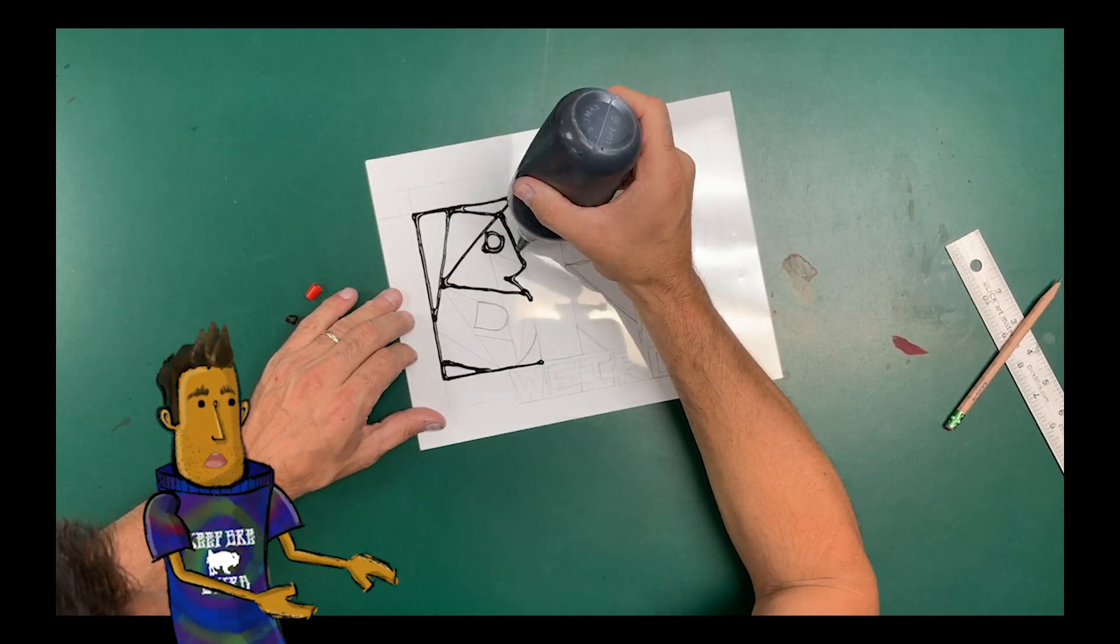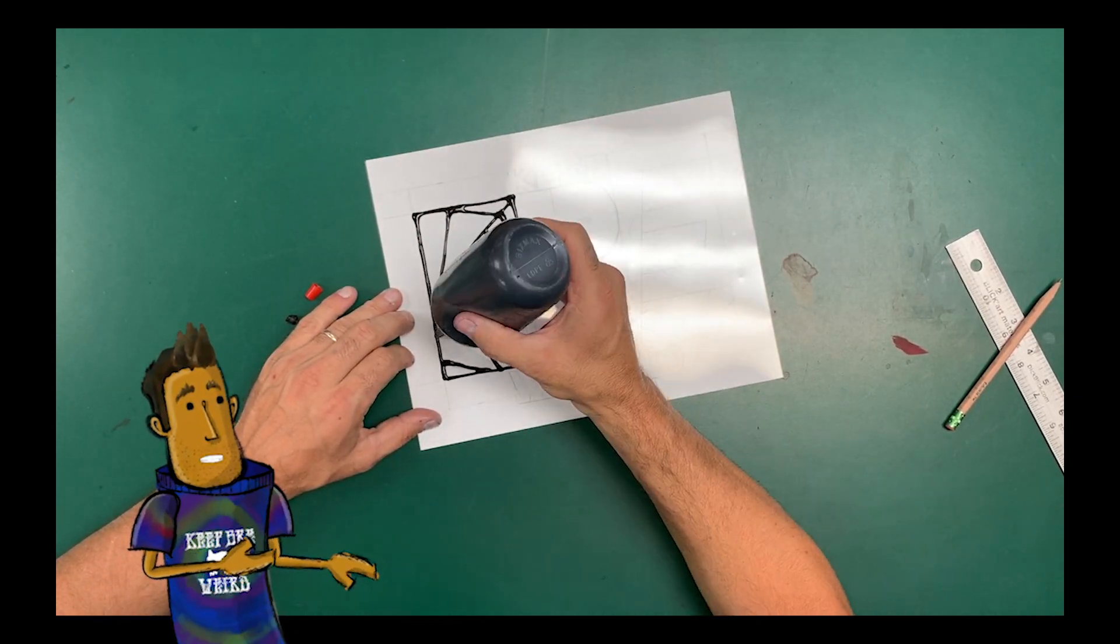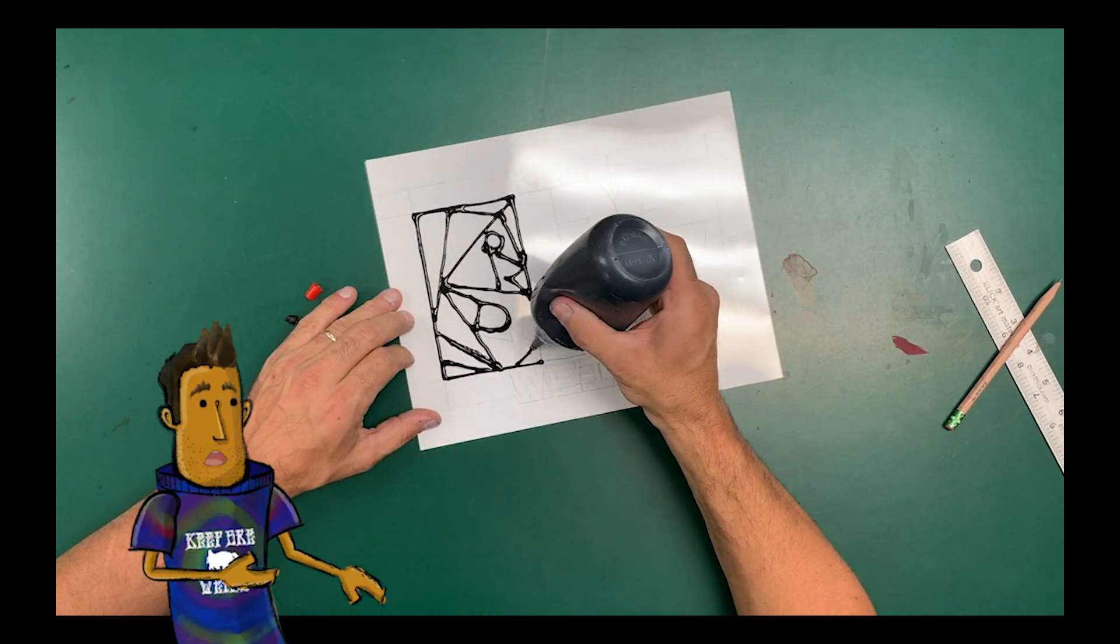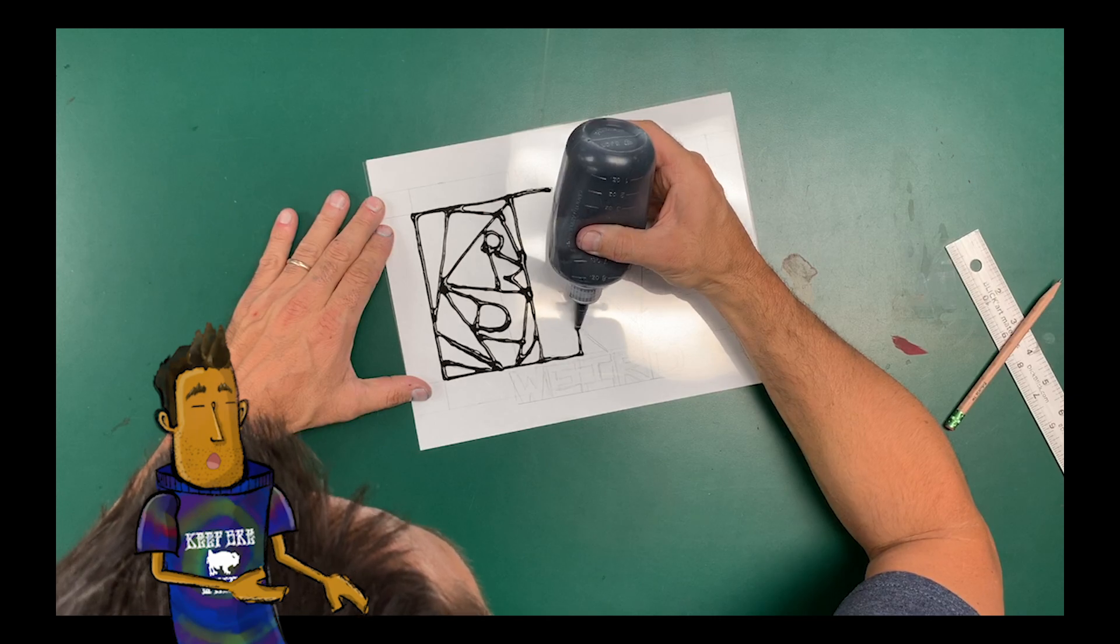And then you guys are going to get a bottle of black glue, and you're going to tip it upside down, and you're going to actually have to draw with this black glue. It's not easy to draw with black glue, or any glue, obviously.